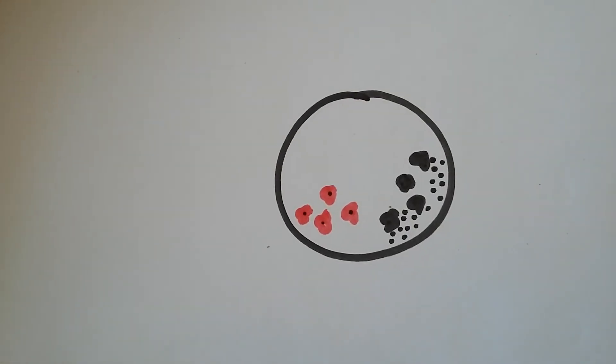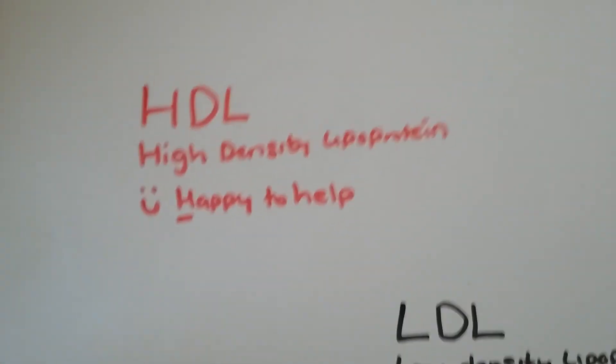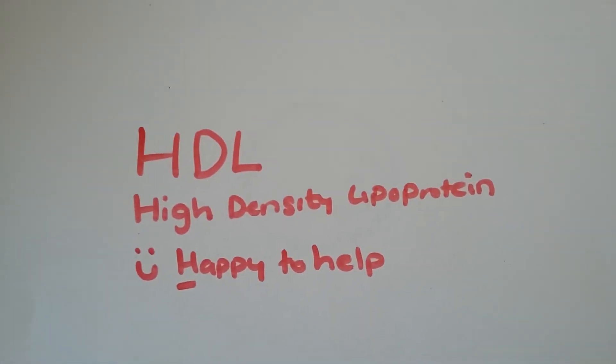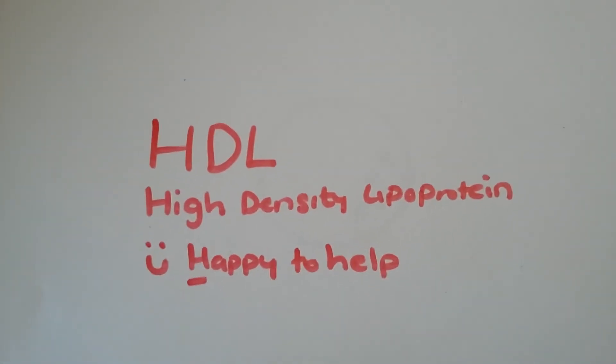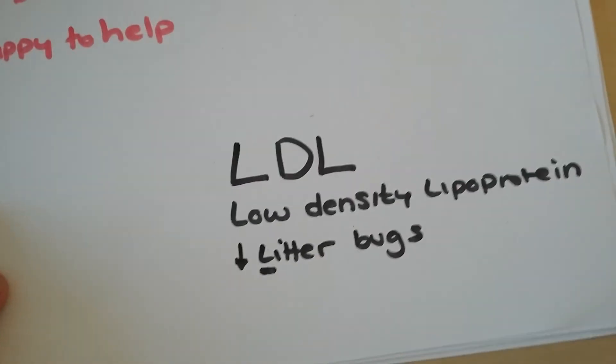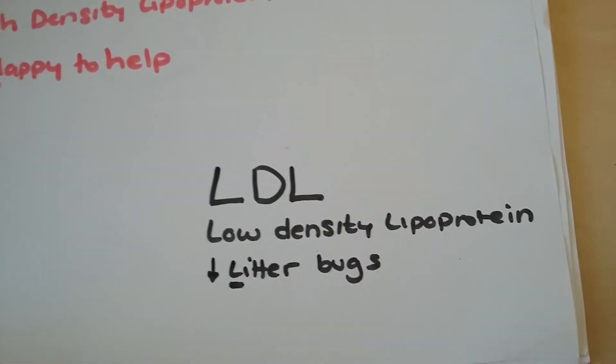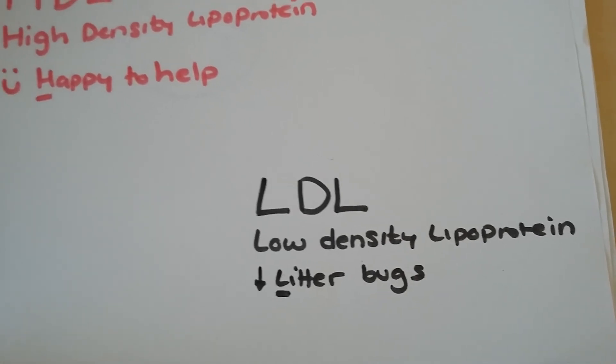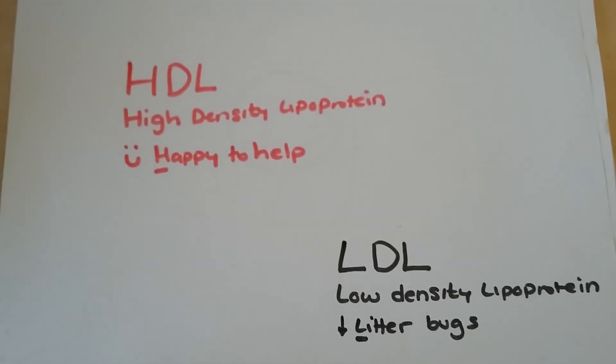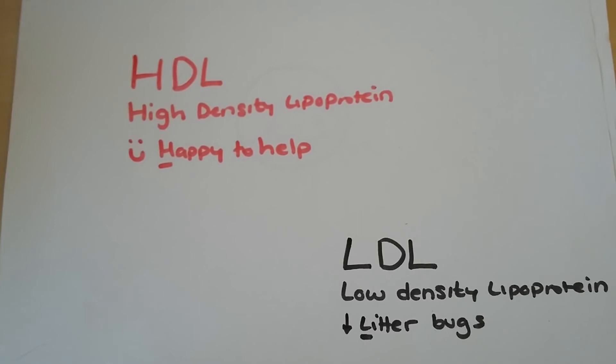So that's my quick guide as to remember the difference between HDLs, which are happy to help. They're the ones that will clean up your arteries, essentially, in a nice crude form. And then also your LDLs, which are the low-density lipoproteins, and they're the litter bugs. They're the ones that drop your fats and plaques all over your arteries.